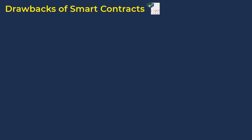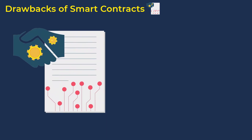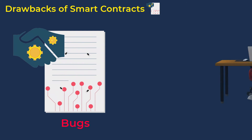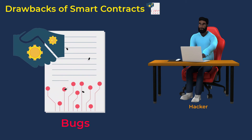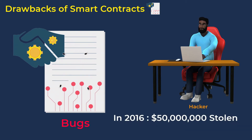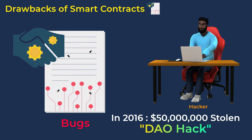Before we end the video, let's talk about some of the drawbacks of using smart contracts. The most obvious drawback is the bugs that can be written in the code accidentally. These bugs can be used by hackers to steal the money in the smart contract. This happened in 2016, where $50 million US dollars were stolen by a hacker in what is known as the DAO hack.